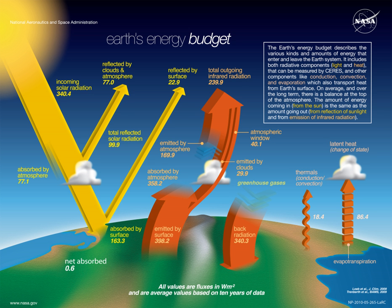Climate sensitivity is the steady-state change in the equilibrium temperature as a result of changes in the energy budget. Climate forcings are changes that cause temperatures to rise or fall, disrupting the energy balance. Natural climate forcings include changes in the Sun's brightness, Milankovitch cycles—small variations in the shape of Earth's orbit and its axis of rotation that occur over thousands of years—and volcanic eruptions that inject light-reflecting particles as high as the stratosphere. Manmade forcings include particle pollution that absorbs and reflects incoming sunlight, deforestation which changes how the surface reflects and absorbs sunlight, and the rising concentration of atmospheric carbon dioxide and other greenhouse gases, which decreases the rate at which heat is radiated to space.